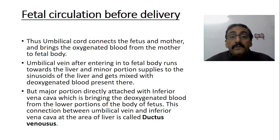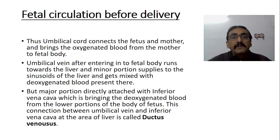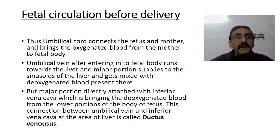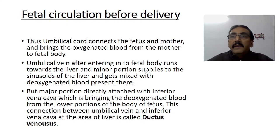The umbilical vein, after entering the fetal body, runs towards the fetal liver. A minor portion supplies the sinusoids of the liver and mixes with the deoxygenated blood already present there. This is the first mixing point — 100% oxygen-rich blood was taken from the maternal side, but on the way it is mixed with impure blood, because the baby does not need 100% oxygenated blood. Nature has made this arrangement so that by the time it reaches the fetal cells, it is mixed with deoxygenated blood.